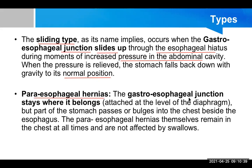In the second type, paraesophageal hernia, the gastroesophageal junction stays in its normal anatomical position and does not go up. However, part of the stomach — mainly the fundic part — passes or bulges into the chest beside the esophagus. The paraesophageal hernia remains in the chest at all times, not affected by swallowing. The lower esophageal sphincter maintains its function, but the herniated stomach may act like a large mass, compressing other structures in the thoracic cavity, causing aspiration, and in severe cases, ischemia.